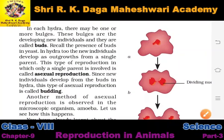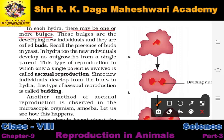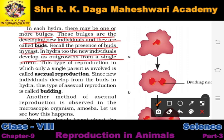In each hydra there may be one or more bulges. These bulges are developing new individuals and they are called buds. Just as yeast also has buds, in hydra too, new individuals develop as an outgrowth from a single parent. This type of reproduction in which only a single parent is involved is called asexual reproduction.